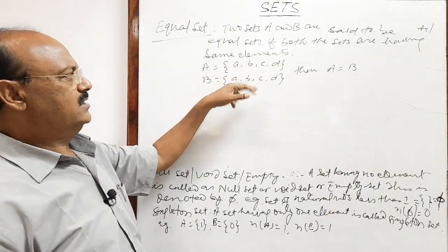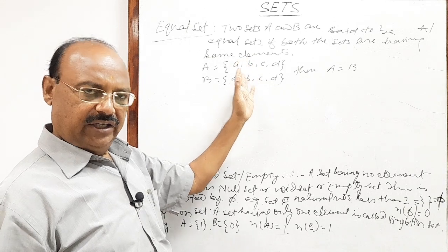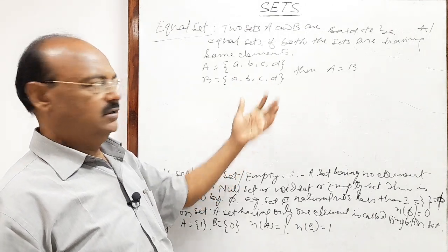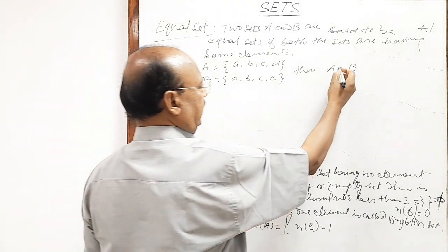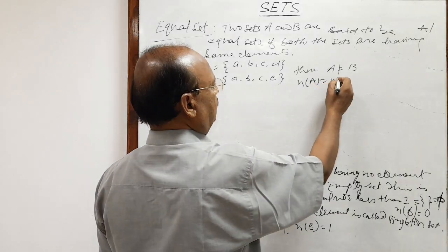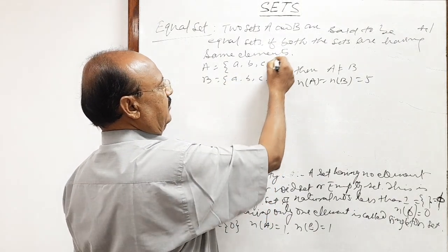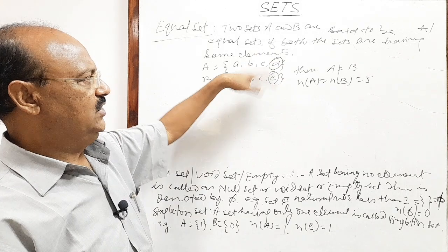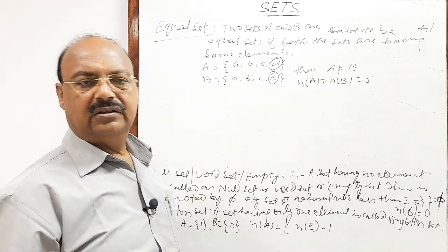If the number of elements is not equal, the sets cannot be equal. If the number of members is equal but any one element is different — for example, if set B has element E in place of one element — then A is not equal to B. In this case, n(A) equals n(B) equals 5, but the two sets are not equal because some elements differ. So in spite of having the same cardinal number, these two sets are not equal.